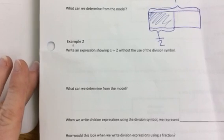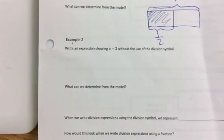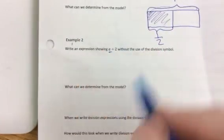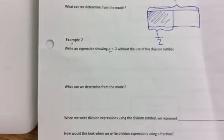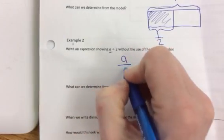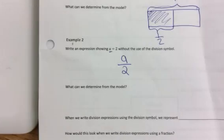Example 2 is going to be writing an expression showing a divided by 2 without the use of the division symbol. So the difference between example 1 and example 2 is example 1, we have a variable. So it's the same idea as 1 divided by 2. Instead of 1 over 2 it's going to be a divided by 2 in fraction form.